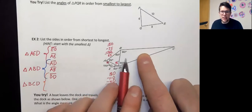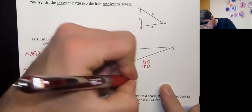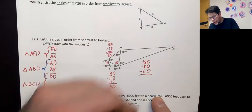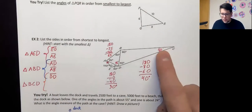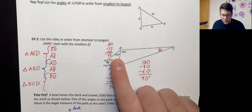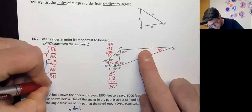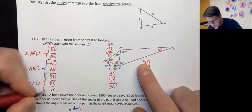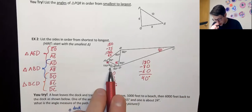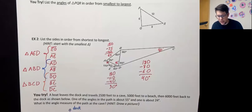Our largest triangle is the last place to visit. We again have two angles but not the third, so we use the triangle sum theorem one final time. We get a final angle measure of 40 degrees. Our smallest angle is opposite the shortest side, then the medium angle gives the medium side, and our largest angle is opposite the longest side, DC. This is not the largest angle in the picture — the 110 is — but you go from smallest triangle to largest triangle, working within each.